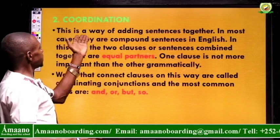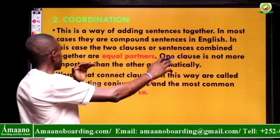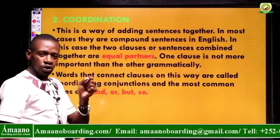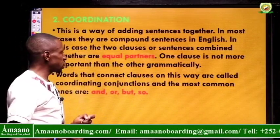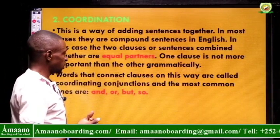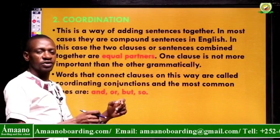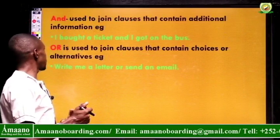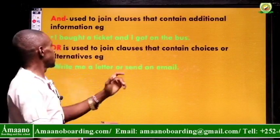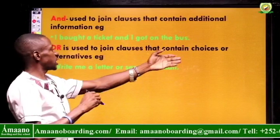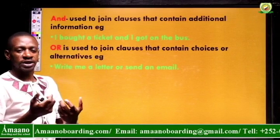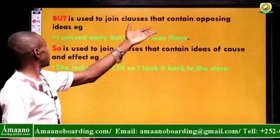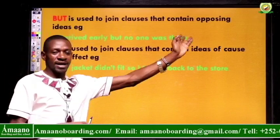The second aspect is coordination. This is a way of adding sentences together, and in most cases they produce compound sentences. The two clauses or sentences are combined into equal partners — this is what we call coordination. Words that connect clauses this way are called coordinating conjunctions. 'And' is used to join clauses that contain additional information — for example, 'I bought a ticket and I got onto the bus.' 'Or' is used to join clauses with choices or alternatives — for example, 'Write me a letter or send an email.' 'But' is used to join clauses with opposing ideas — for example, 'I arrived early, but no one was there.'